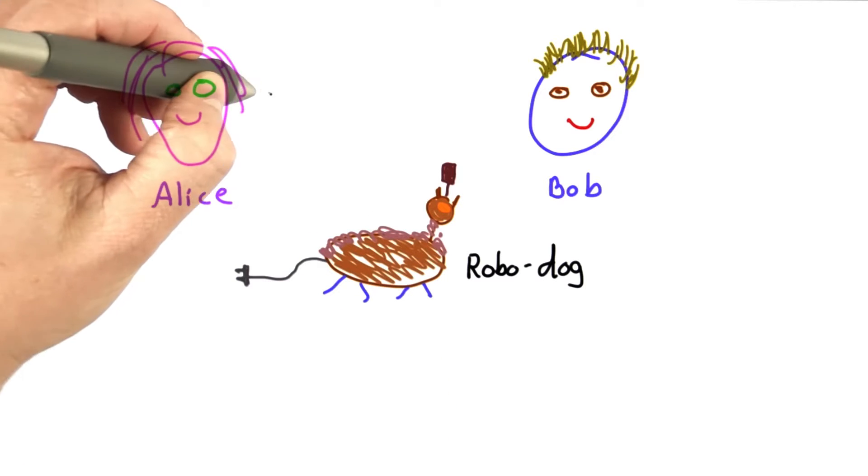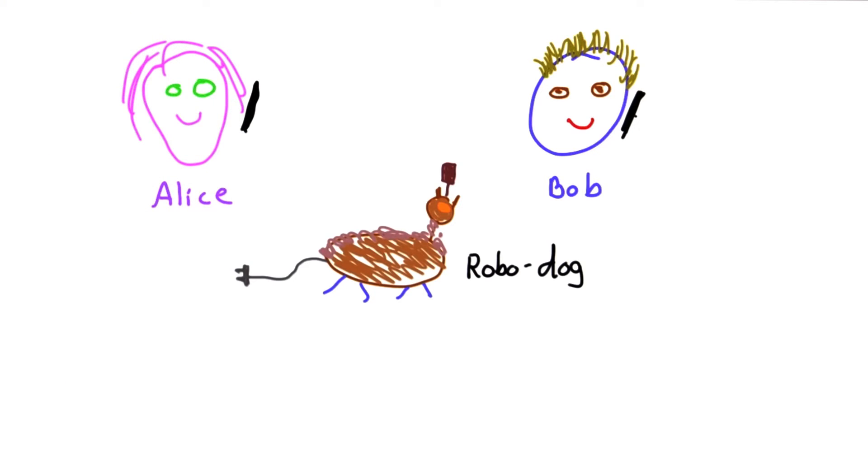But they're not in the same place. They're trying to do this over the telephone. They would normally do this by tossing a coin. So they decide, let's try to toss a coin over the telephone.